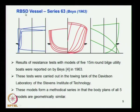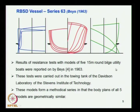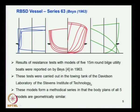Moving to the next one — again a round bilge semi-displacement vessel — it is Series 63, published in 1963. Here also you can see the form: it is a round bilge with a transom stern, and the half breadth plan is given. The results of resistance tests with models of 5 to 15 meter long round bilge vessels are reported — bigger than the previous series. Tests were carried out at the Davidson Lab and Stevens Institute of Technology.